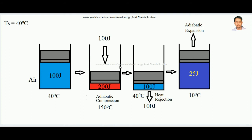Since the walls of the cylinder are conducting, and the inside temperature (150°C) is greater than the surrounding temperature (40°C), heat will start going out of the system. Heat transfers from high temperature to low temperature until both systems reach thermal equilibrium. Heat will come out until the inside temperature equalizes the surrounding temperature. Suppose 100 joules of heat energy is removed from the system.